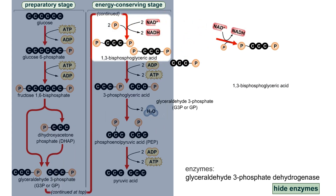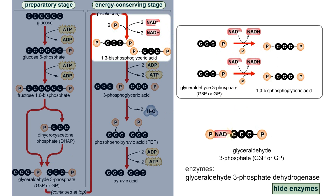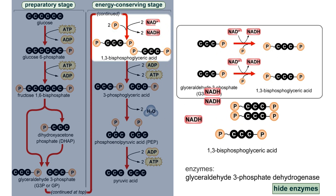In the sixth step of glycolysis, glyceraldehyde-3-phosphate is converted to 1,3-bisphosphoglyceric acid. Remember that each glucose molecule fed into the pathway results in the production of two molecules of glyceraldehyde-3-phosphate, and therefore two molecules of each of the products from this step onward. The phosphate in this reaction does not come from ATP, but rather from a free inorganic phosphate in solution. During the oxidation of glyceraldehyde-3-phosphate, one NAD+ is reduced to NADH for each of the two 1,3-bisphosphoglyceric acid molecules formed.